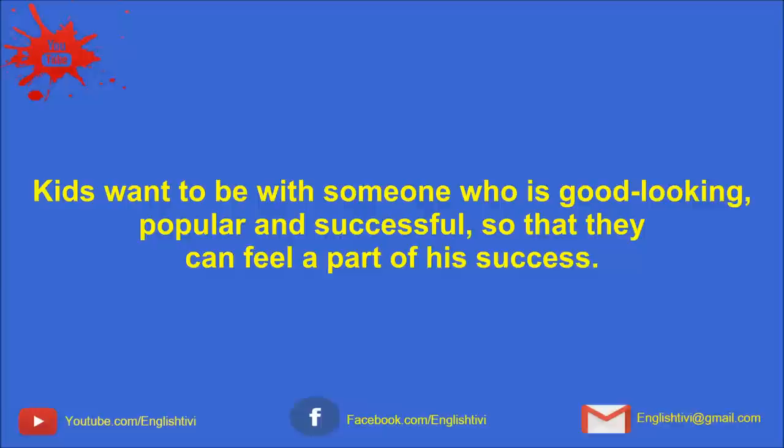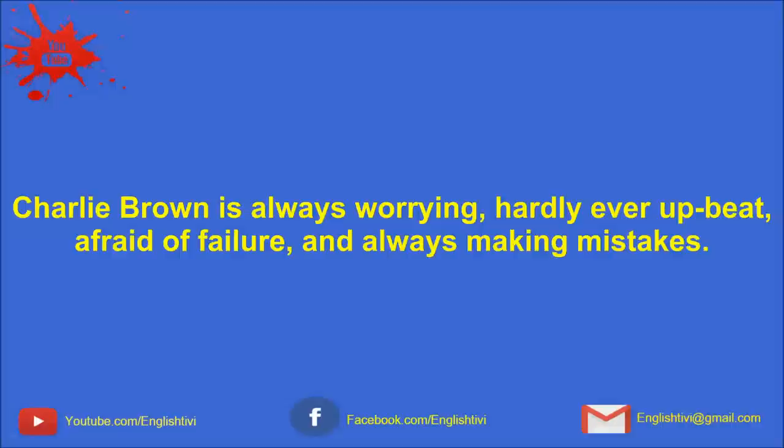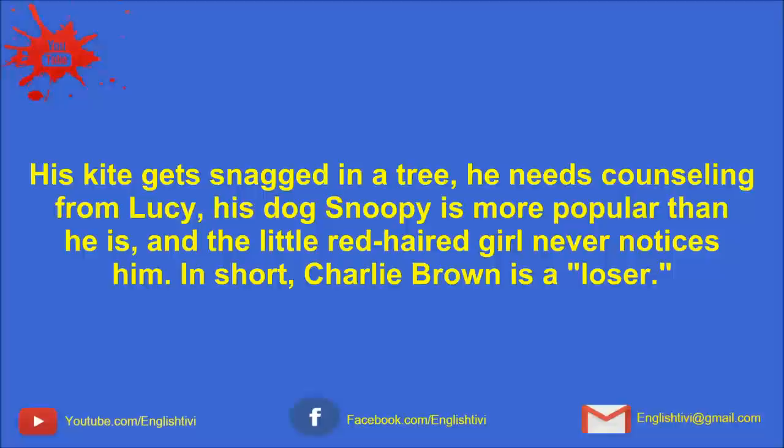Charlie Brown is always worrying, hardly ever upbeat, afraid of failure, and always making mistakes. His kite gets snagged in the tree. He needs counseling from Lucy. His dog Snoopy is more popular than he is. And the little red-haired girl never notices him. In short, Charlie Brown is a loser.